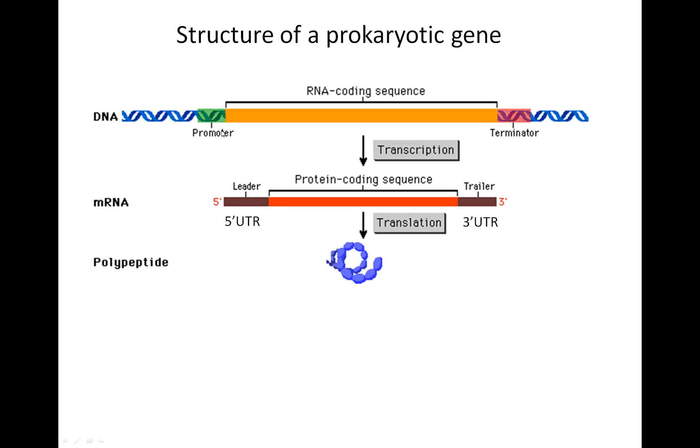Right before that, there are some sequences called a promoter, which help the RNA polymerase to get recruited. And at the end, there are some sequences called a terminator, which tell it to stop transcribing.